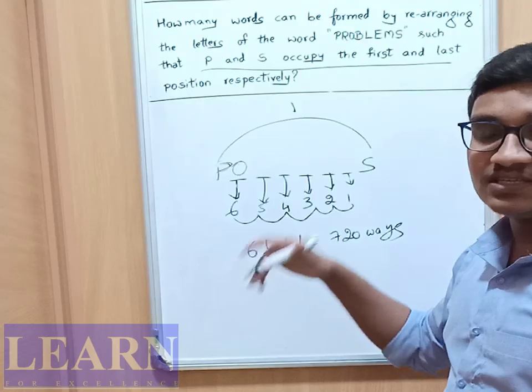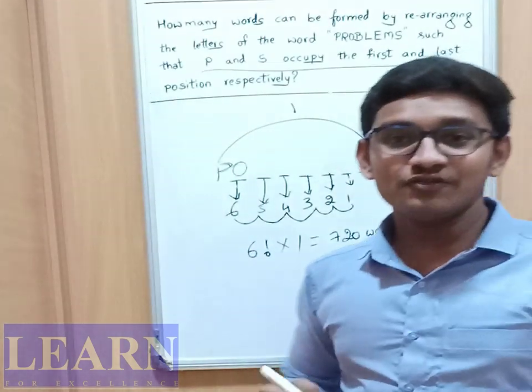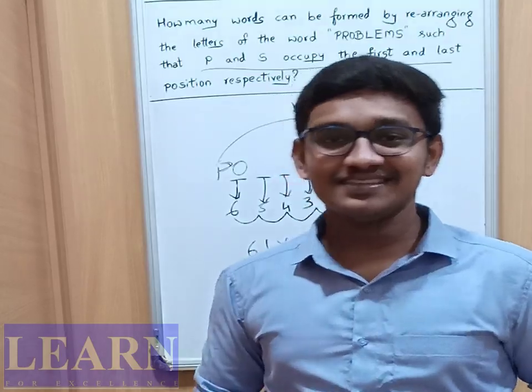Total is 6 factorial ways, which is nothing but 720 ways. Thank you for watching this video. Hope you have got this question. Don't forget to subscribe our channel. Thank you.